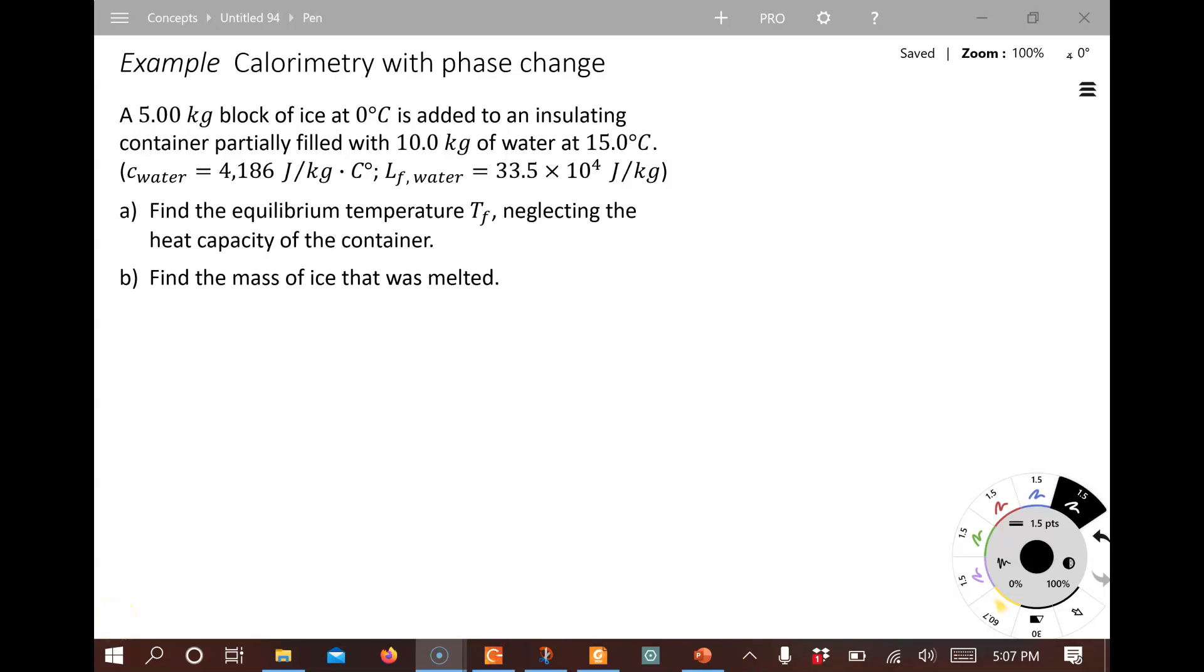Hi, this is an example problem from Chapter 12 that involves calorimetry with phase change. Pause for a moment and read the question. In this case we've got ice that is at 0 degrees Celsius and it's added to a container filled with a certain amount of water at 15 degrees Celsius. We're asked to find the equilibrium temperature, neglecting the heat capacity of the container, and then find the mass of ice that was melted.